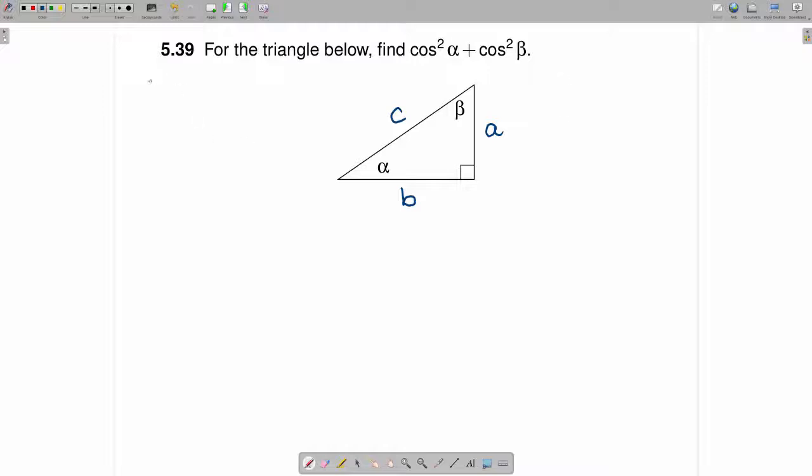You know from your definitions that cosine is the adjacent divided by the hypotenuse. So when we're calculating cosine squared alpha plus cosine squared beta, which is what we're looking for,